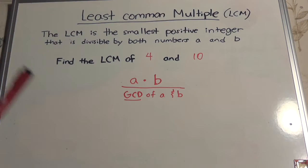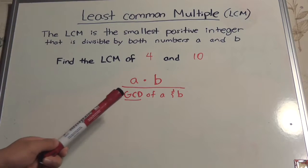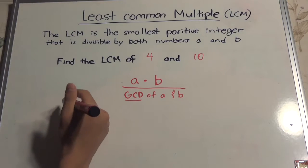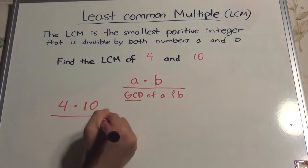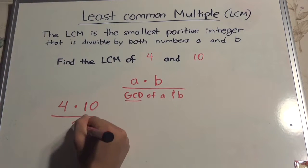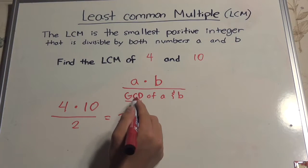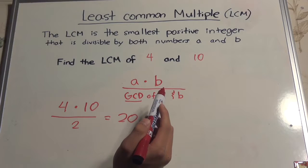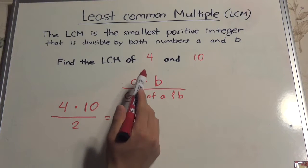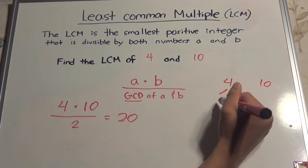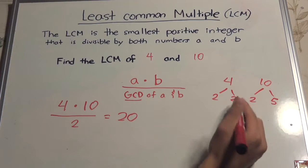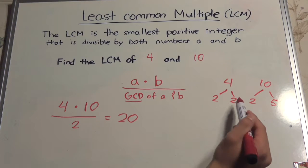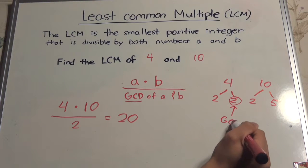If we wanted to put this concept into formula form, it would be: A times B over the greatest common divisor of A and B. Going back to the example of LCM(4, 10): 4 times 10 over the greatest common divisor of A and B, which is 2, gives us 20. The greatest common divisor is the biggest possible factor that matches up for both A and B. Factoring 4 gives 2 and 2; factoring 10 gives 2 and 5. The biggest matching number is 2, so 2 is the greatest common divisor.